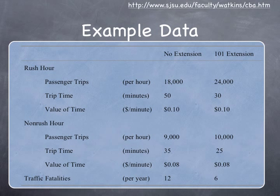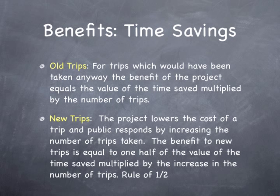There are also values for non-rush hour. There are benefits of time saving for the old trips — trips that would have been taken anyway. That benefit is the rectangle of the consumer surplus analysis, or the value of time saved multiplied by the number of trips. For new or induced trips, we estimate the area of the consumer surplus triangle: one-half of the time saved multiplied by the number of new trips. This is the rule of one-half.